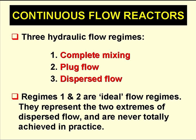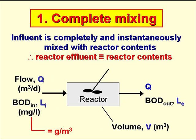In a reactor, there are three types of hydraulic flow regime: complete mixing, plug flow, and dispersed flow. The first two are ideal flow regimes, and are never totally achieved in practice. We'll look first at complete mixing. With this ideal flow regime, the influent is completely and instantaneously mixed with the reactor contents, and this means that the effluent from the reactor is identical in every respect to the reactor contents.